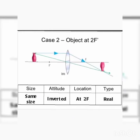The second case: if your object is at 2F. The first ray goes parallel and refracts through the focus. The second ray goes directly through the optical center. Image formation occurs here. You will have to draw imaginary lines to the principal axis and as a result, the image forms. The size of the image will be the same size. The attitude will be inverted. The location will be at 2F. If your object is at 2F, then your image will be at 2F on the opposite side. This type of image is real and inverted.